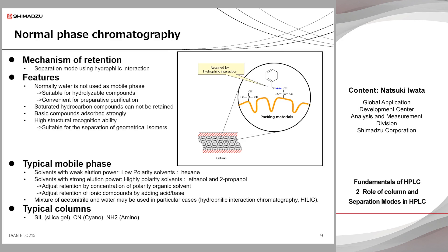If the target compounds are ionic, their retention can be adjusted by adding acid or base. The hydrophilic interaction chromatography, HILIC, is commonly used for saccharides analysis, and the typical mobile phase is a mixture of water and acetonitrile. HILIC is considered as one type of normal phase chromatography in some cases, because the retention time is increased when the mobile phase composition is changed to increase the ratio of organic solvent. This is completely different from the retention behavior of the reversed phase mode — that's the reason why some people say HILIC belongs to normal phase chromatography. Typical stationary phases are highly polar groups such as cyano group, amino group, or hydroxyl group remaining on unmodified silica gel.